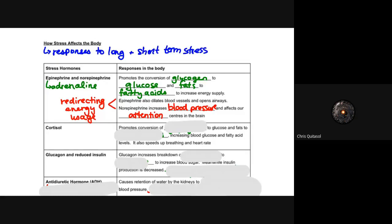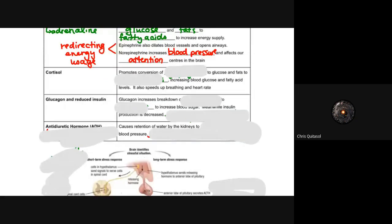Norepinephrine increases blood pressure and affects attention centers in the brain — it may increase or decrease attention depending on the pathway. These adrenal hormones are a response to a stimulus where your body says it needs more energy. Cortisol also comes up often in stress research — it promotes conversion of glycogen to glucose and fatty acids, increases blood glucose and fatty acid levels, and speeds up breathing and heart rate, though unlike epinephrine it doesn't dilate blood vessels or open airways.